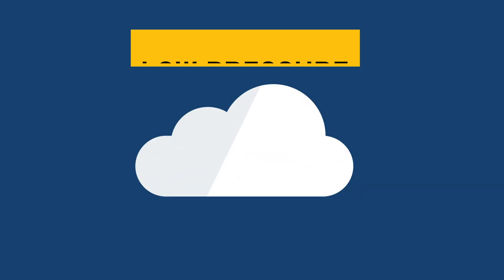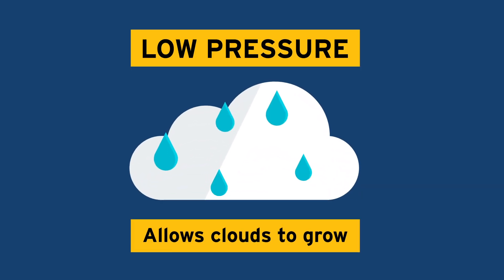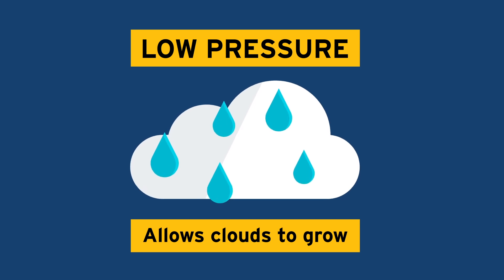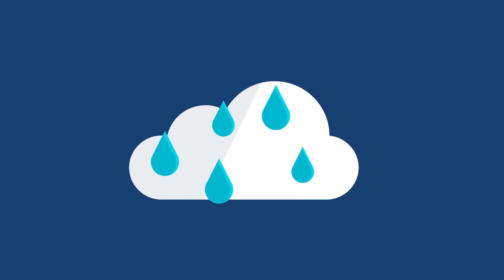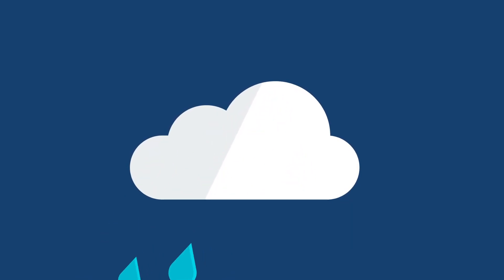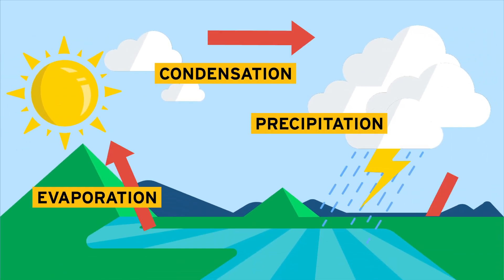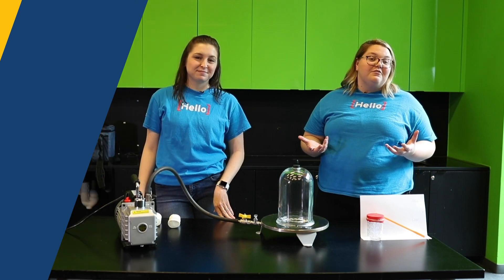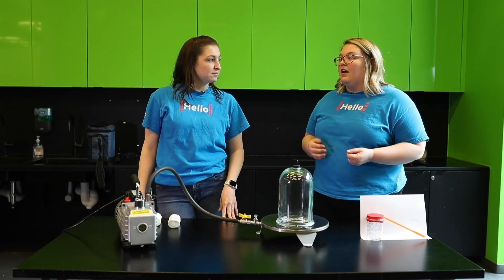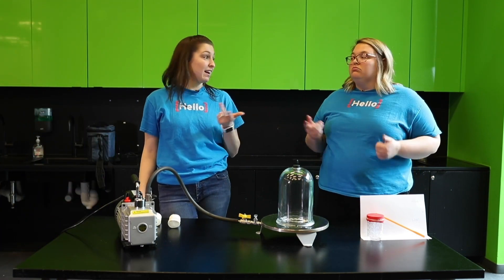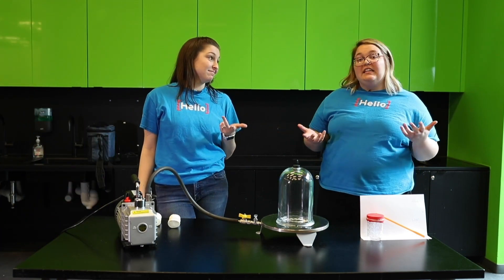Low pressure allows clouds to grow, condense more water droplets, and become heavier and heavier, eventually to where that water is going to fall out. Following back to our water cycle, we call that precipitation. That can be in a lot of different forms: we've got rain, snow, hail, and sleet.